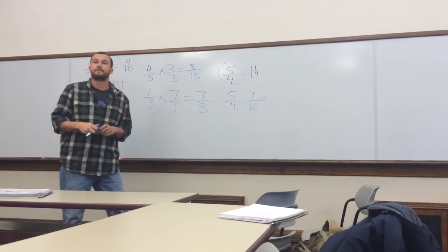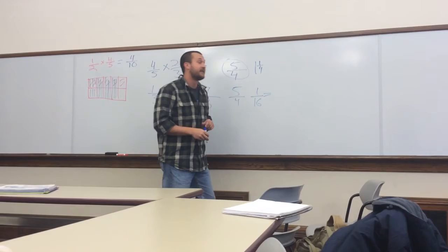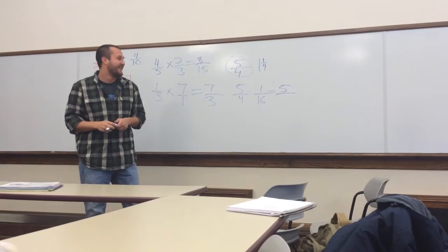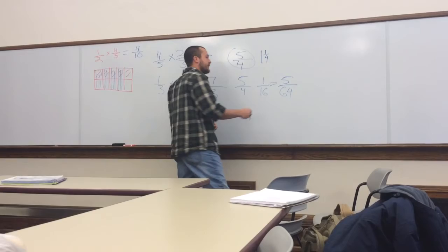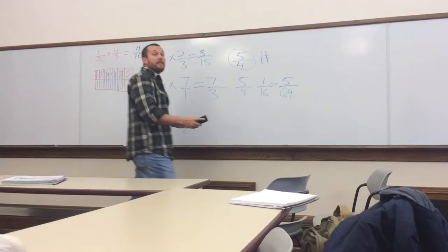What's our first step? Anybody? Multiply the top. Then multiply the top. And what does that equal? 5. And what would be our next step? Multiply the bottom. Okay, and what does that equal to? 64. Very good. Now, is this fraction as low as we can get it? Yes. It is. Very good. So 5 64ths is the answer.